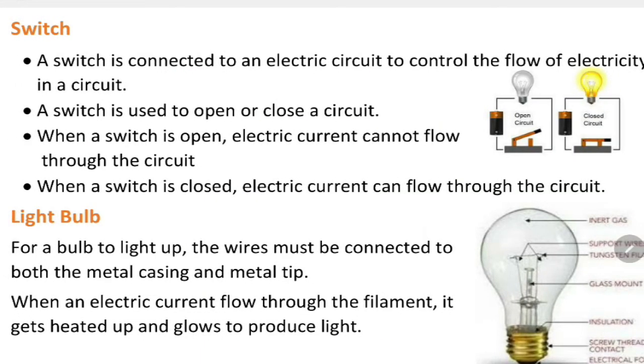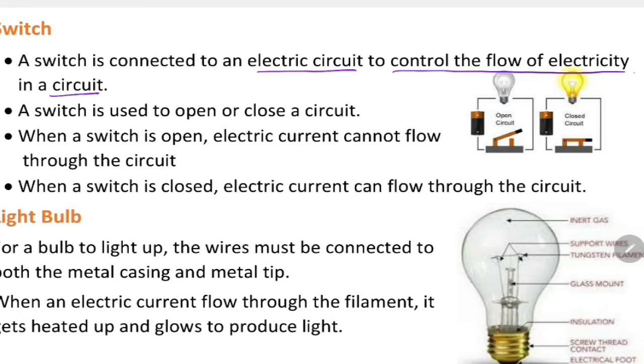Let's look at a switch and light bulb. A switch is connected to an electric circuit to control the flow of electricity in a circuit. A switch is used to open or close a circuit. When a switch is open, electric current cannot flow through the circuit. When a switch is closed, electric current can flow through the circuit.